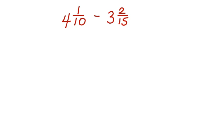Here's one more. 4 and 1 tenths minus 3 and 2 fifteenths. Notice right away that the fractions here are very small. 1 tenths is a small fraction. 2 fifteenths is a small fraction. To do this estimate, we can actually just ignore those. And we can say that 4 minus 3 is equal to 1.